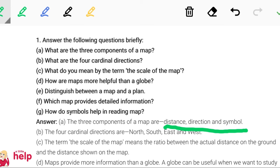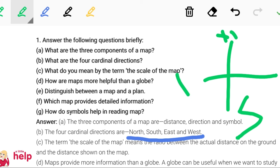What are the four cardinal directions? Students, the four cardinal directions are North, South, East, and West. Let me tell you once more: North, South, West, and East. Okay students, let's move to the next question.